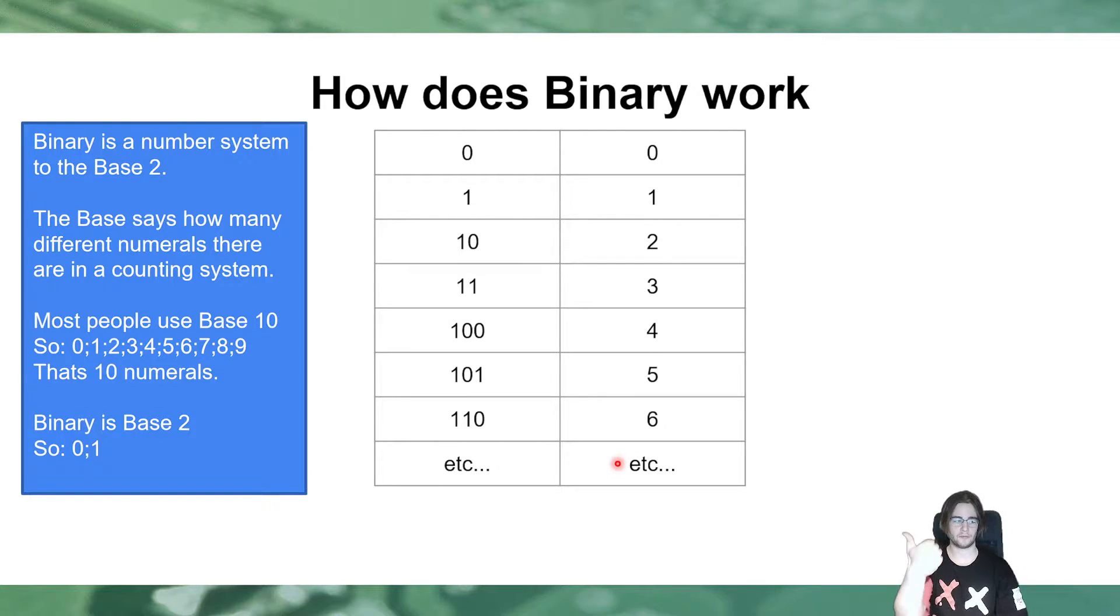And the same is with binary, you have 0 and 1, and 1 plus 1 is 1, 0, in this case. As you see here, I kind of counted from 0 to 6 in binary, and just wrote down the number according, like the same number, but in base 10 next to it. It just, it works like that. You start with 0, 1, 1, 0, 1, 1, 1, 0, 0, and so on. Just continues with the same principle after that. Kind of works like base 10, just you have way less numerals. You just have 2, 0, and 1.